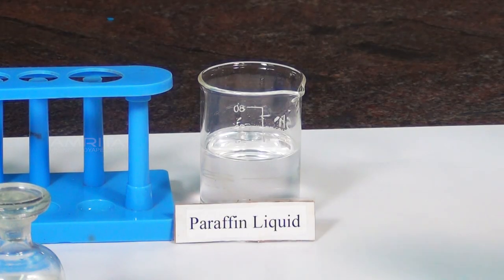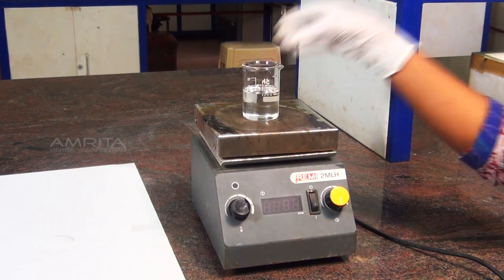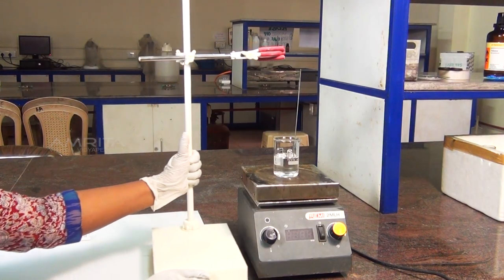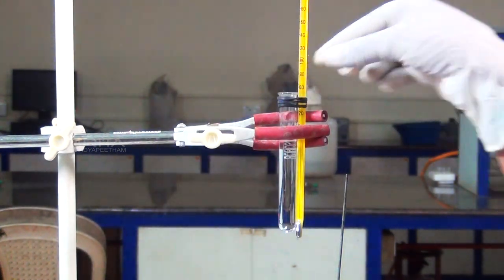Take the 100ml beaker half filled with liquid paraffin and place it over the hot plate. Now place the stand near the hot plate and clamp the thermometer carrying the test tube to the stand.